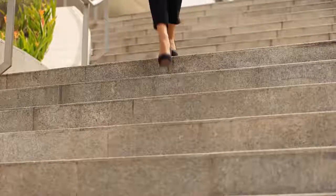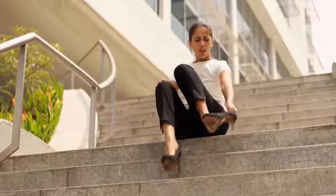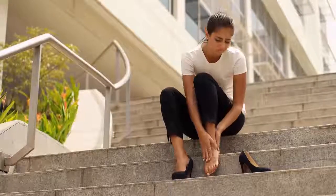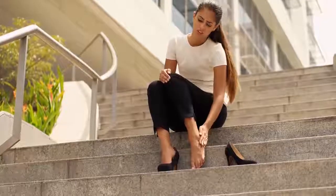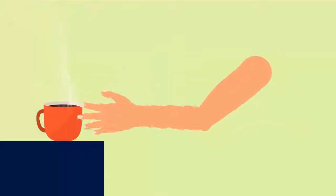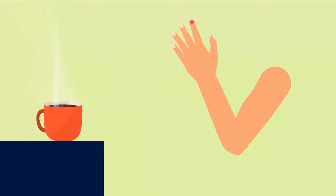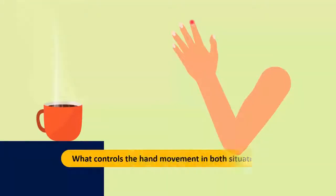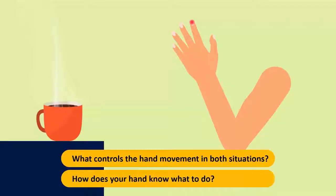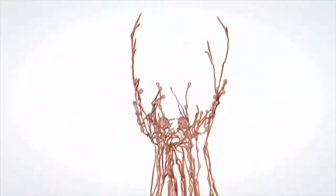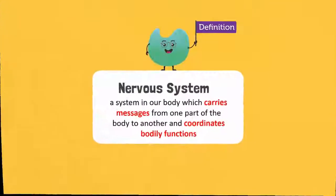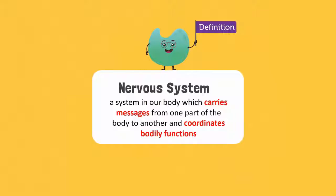When you injure your foot while walking, you feel pain and your hand immediately reaches for the place of injury. When you touch a hot object, your hand automatically moves away. So what controls the hand movement in both situations? How does your hand know what to do? There is a system in our body which carries messages from one part of the body to another and coordinates bodily functions. This system is called the nervous system.